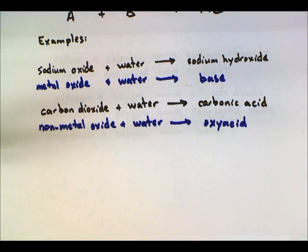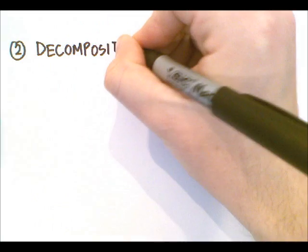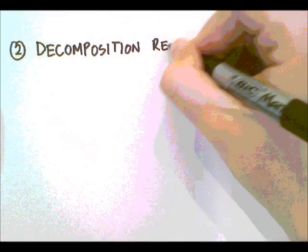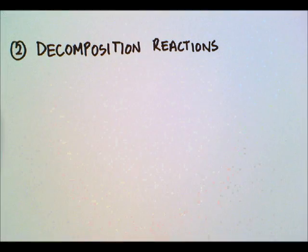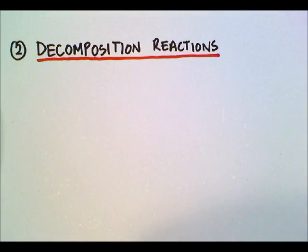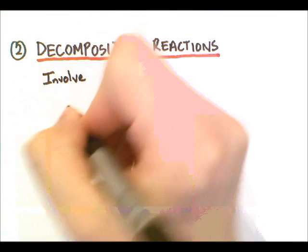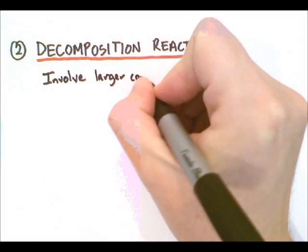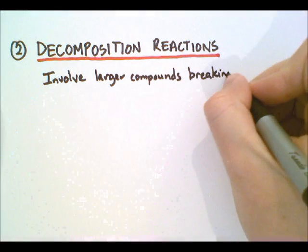Those are our synthesis reactions. Our second type of reaction is what we call the decomposition reaction. Decompositions are similar to what the word sounds like — think back to ecology, decompose, we're breaking things down. In a decomposition reaction, we take large molecules and break them into smaller molecules or even elements.